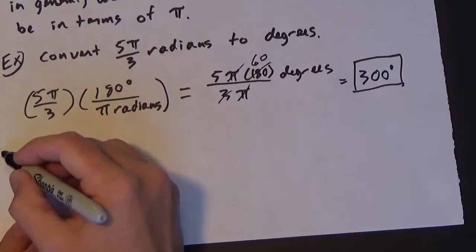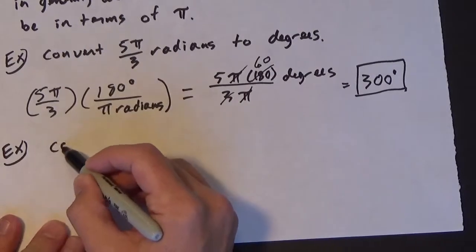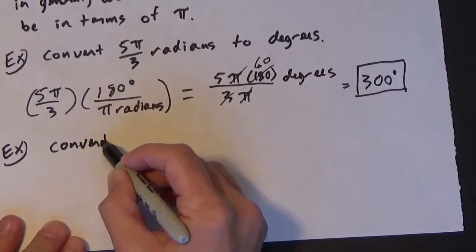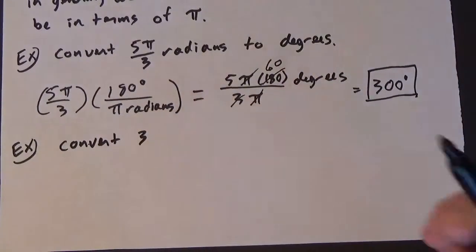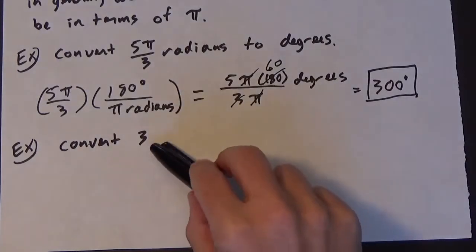Let's do one more. And let's say you're asked to convert 3. So we're sitting there going 3. Well, 3 what? Is it 3 degrees? Is it 3 radians? I don't understand. Now one thing about radians. This is actually going to be 3 radians.